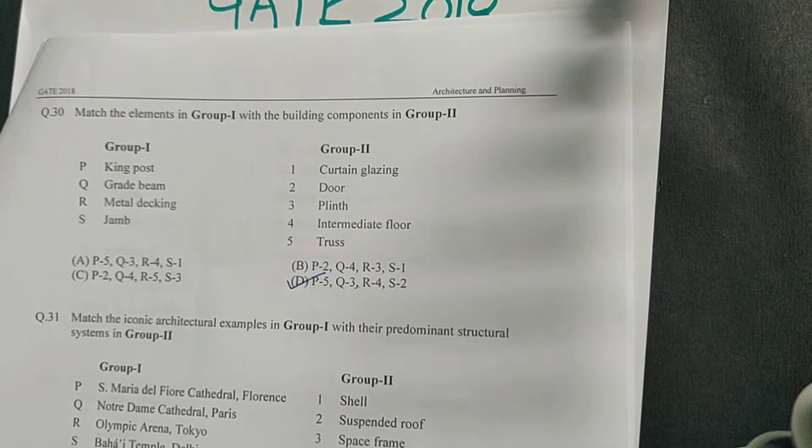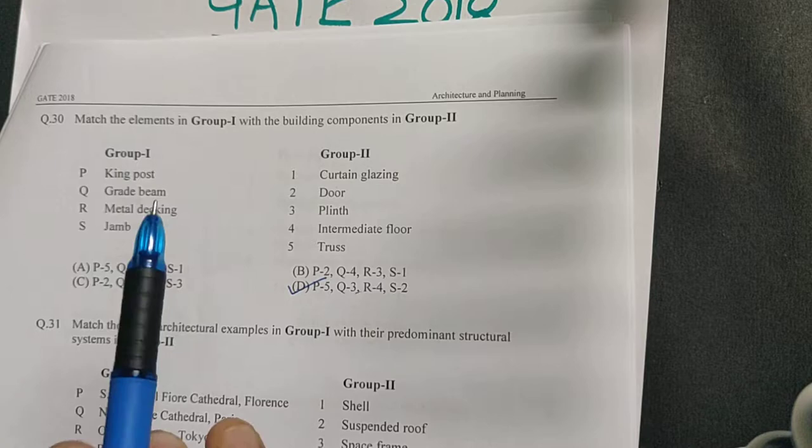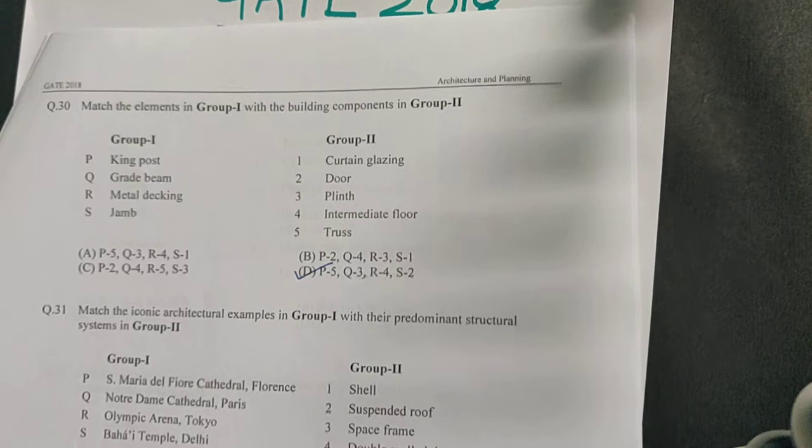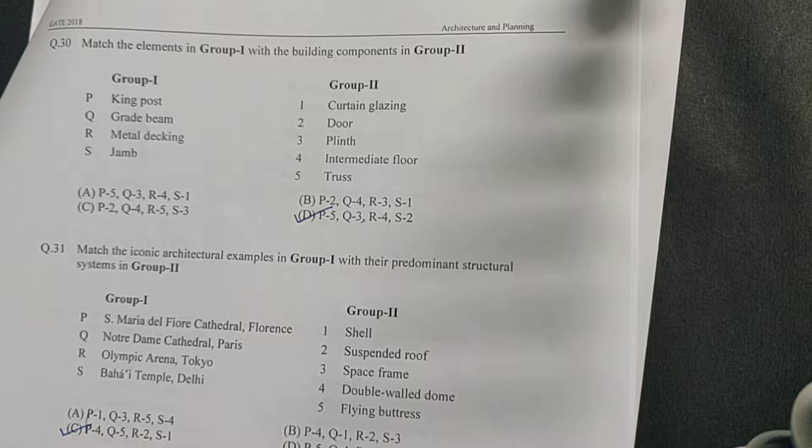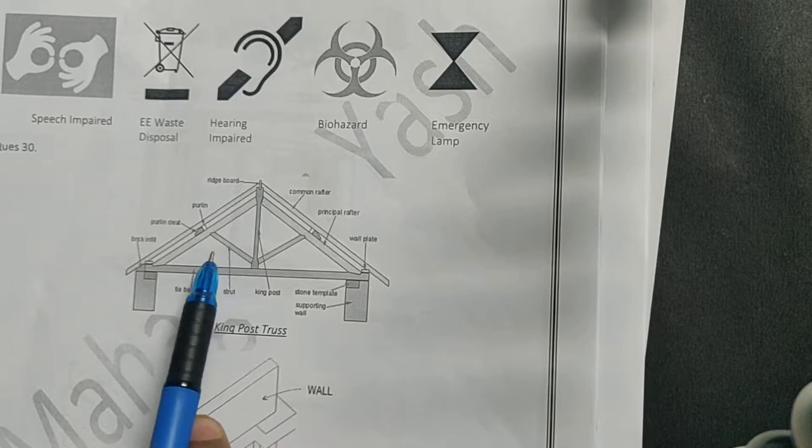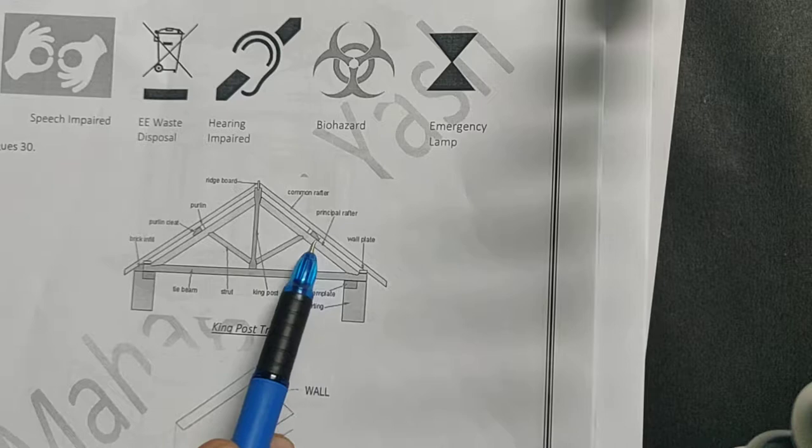Question number 30. You have different building components and elements given, so you have to match which element is part of which building component. We have king post, grade beam, metal decking, and jam. Let's see what these terms mean. A king post is a type of truss. You can see this is a king post truss with struts, a king post, and rafters.